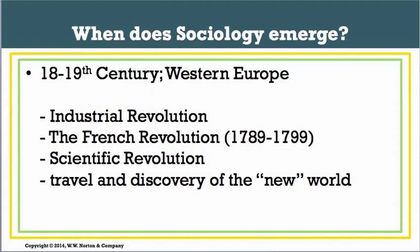When does sociology emerge? We trace the beginning of sociology as a field to the 18th and 19th century in Western Europe. That's because of four forces that changed the world as we know it: the Industrial Revolution, the French Revolution, the Scientific Revolution, and travel as well as discovery of the New World.